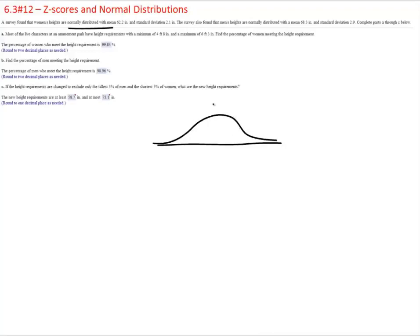So here is my normal distribution with a mean of 62.2 inches and a standard deviation of 2.1. Now this is for women, right?